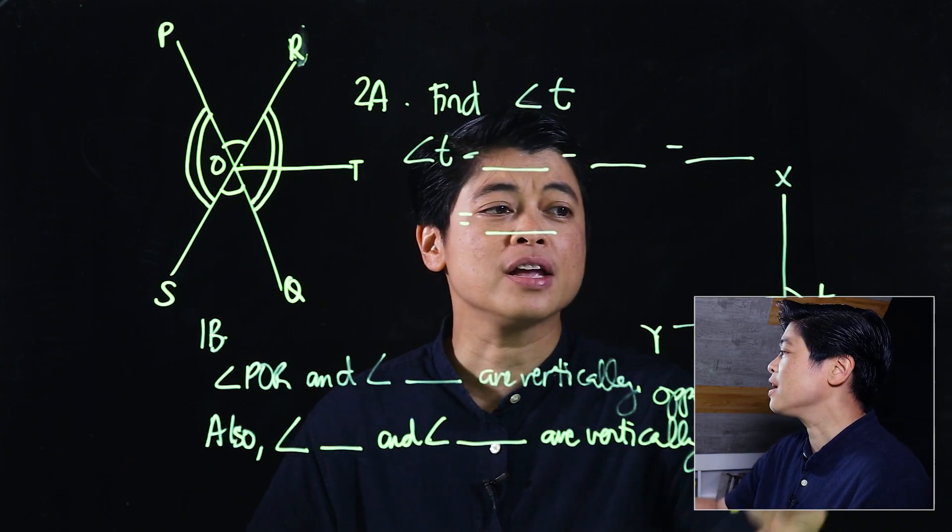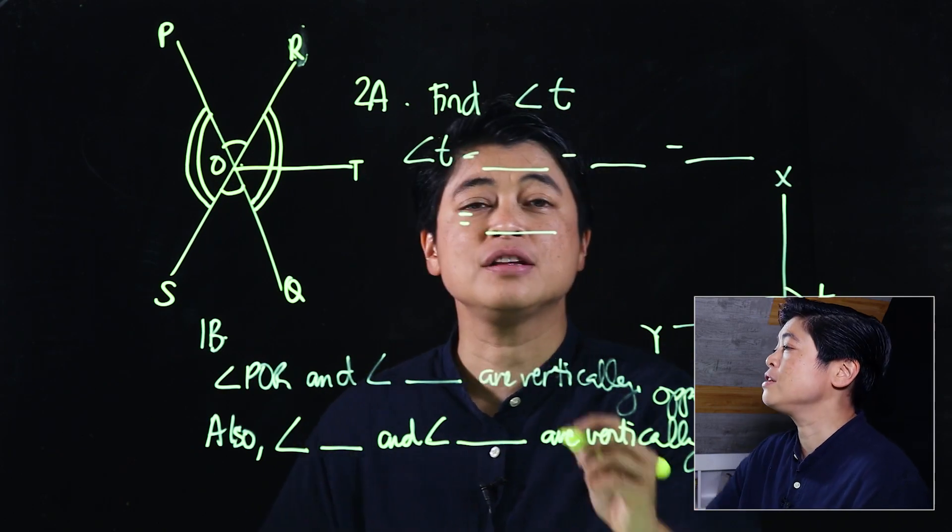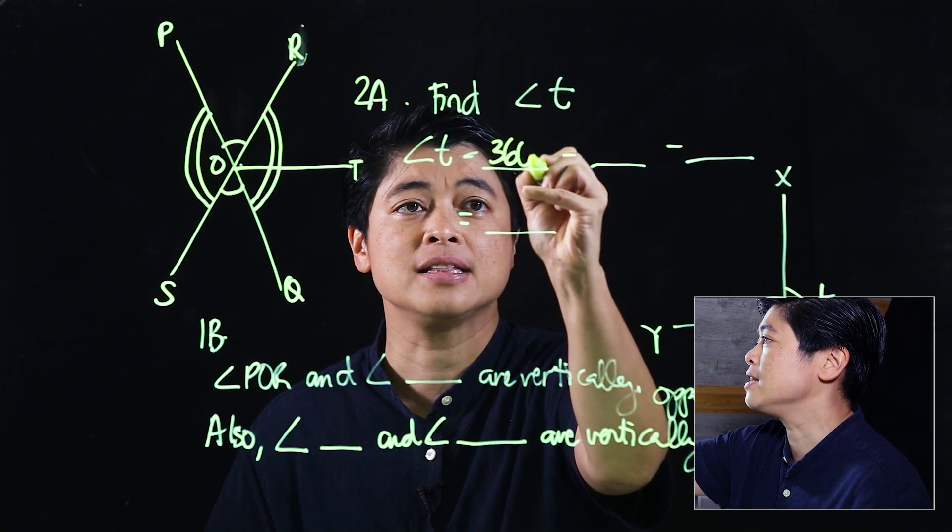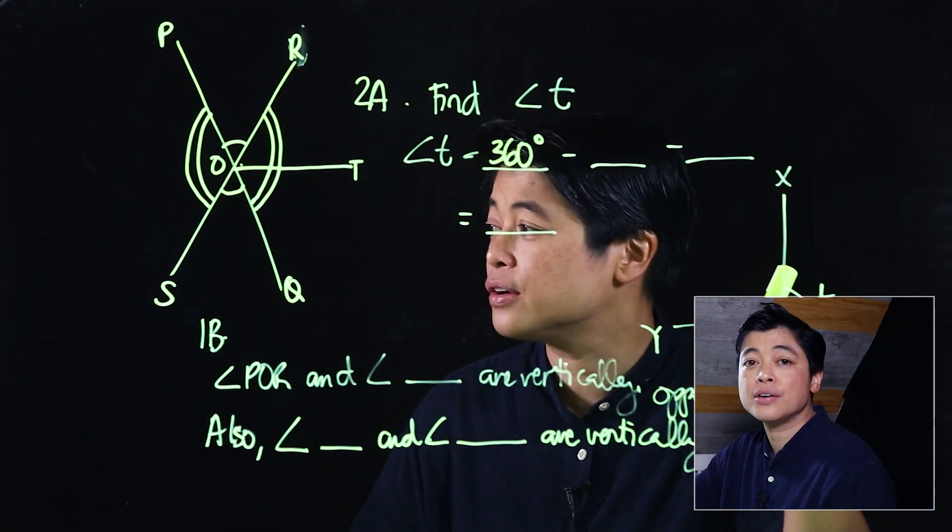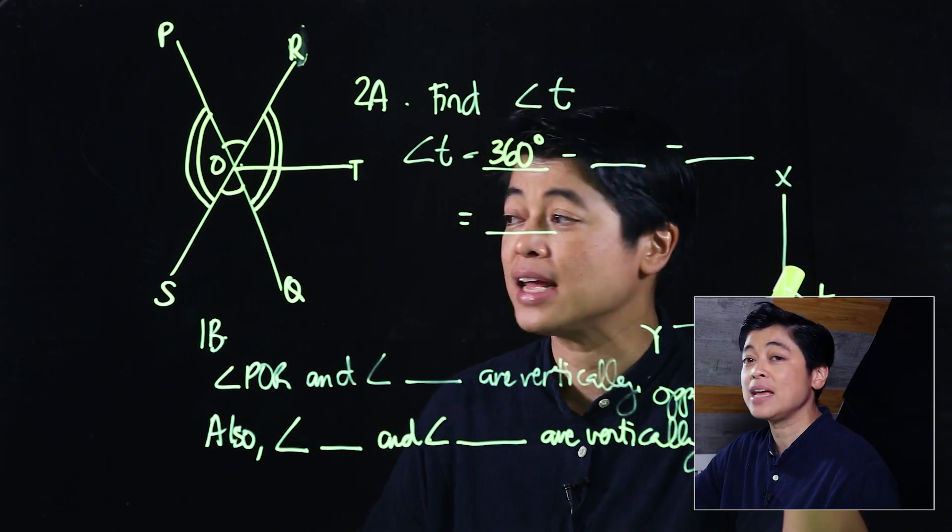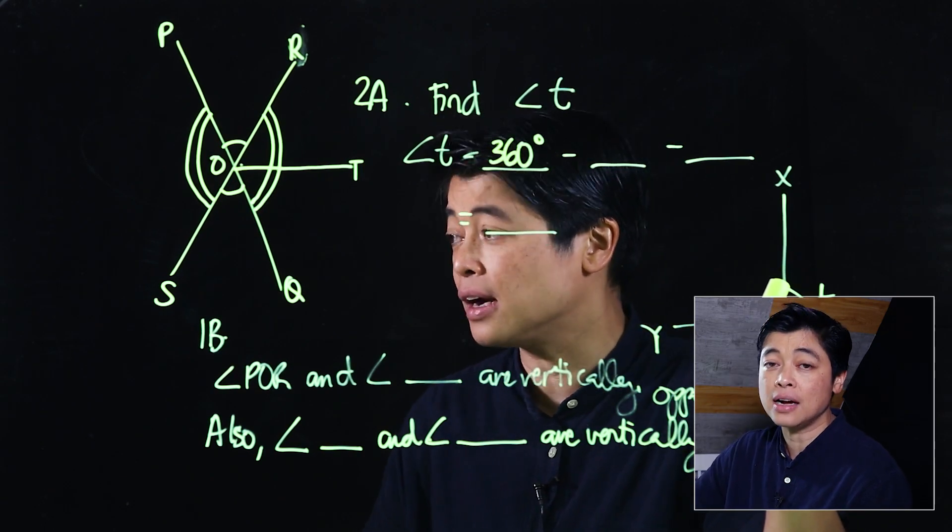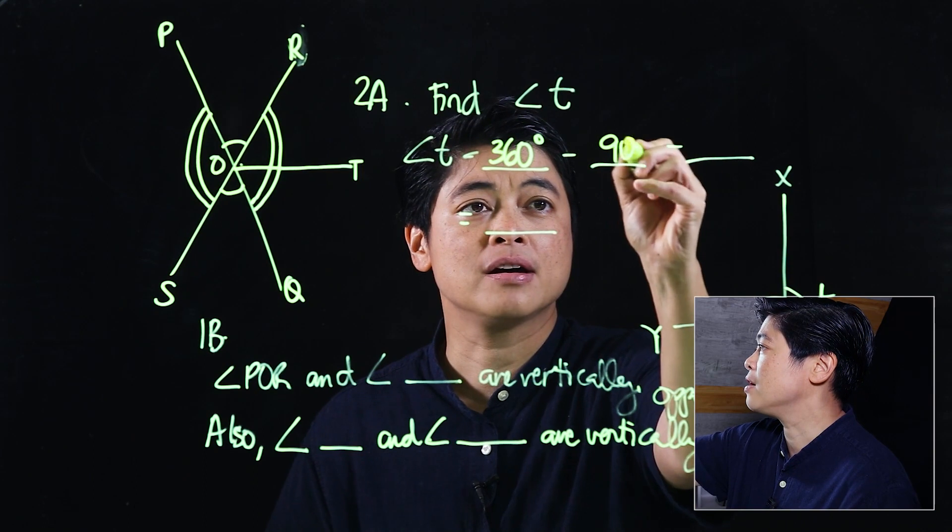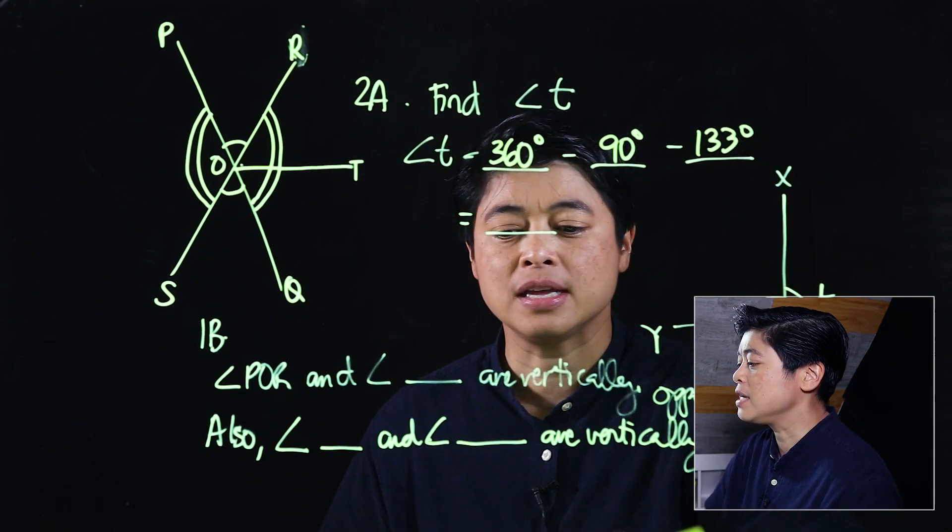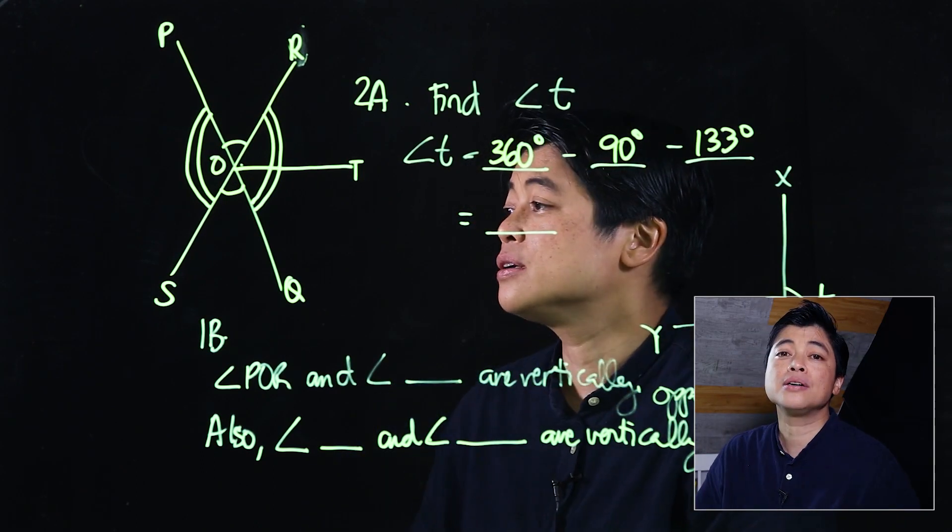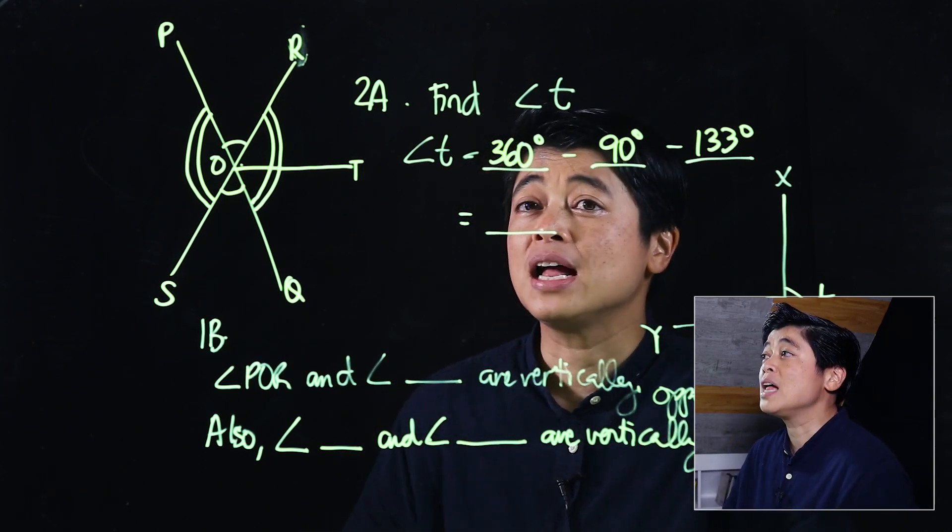If we're looking for angle T, that means we start with 360 degrees, then we gotta subtract that angle. The fact that it has a mark like that, that means that's a right angle, so that means minus 90 degrees, and then we need to minus our 133 degrees.